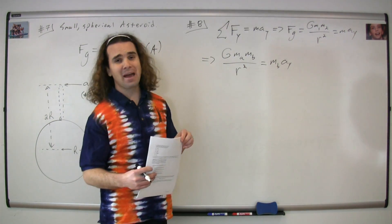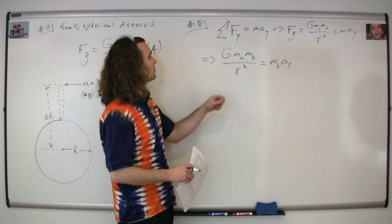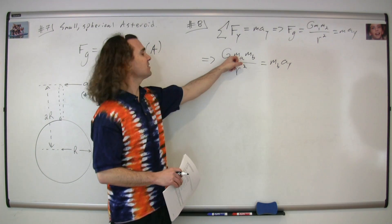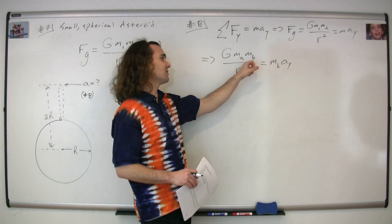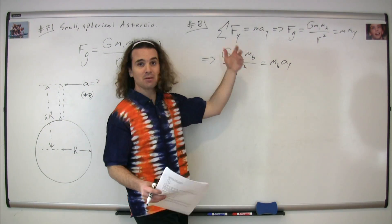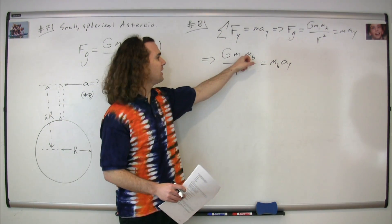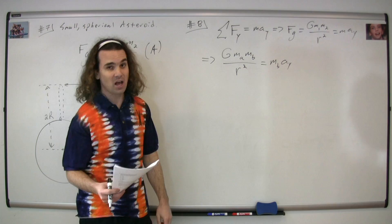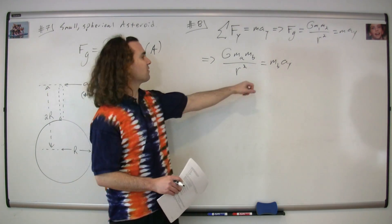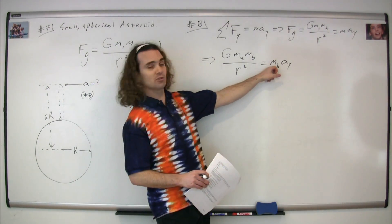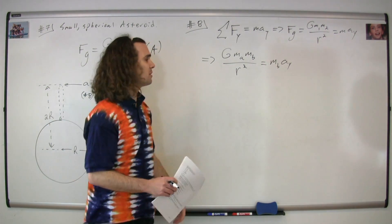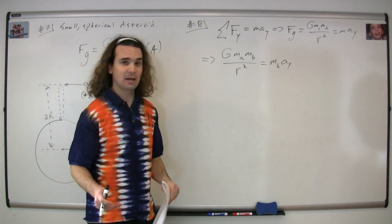We can now substitute in the masses into our equation. The mass of the first object would be the mass of the asteroid. The mass of the second object can be the mass of the ball. And we're summing the forces in the y direction on the ball. Therefore, this is also going to be the mass of the ball, and you can see that the mass of the ball cancels out.